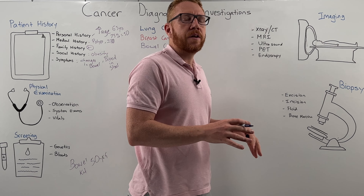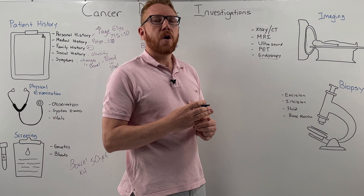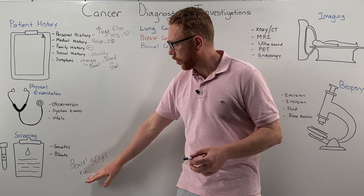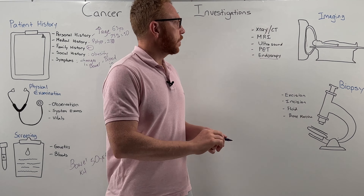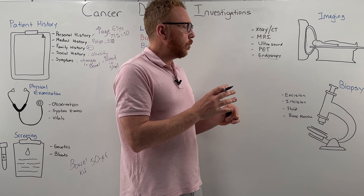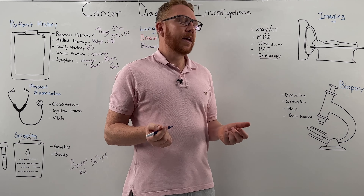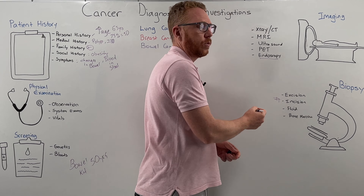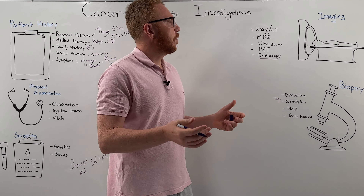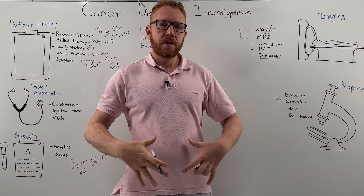For imaging, a colonoscopy is performed — particularly for high-risk individuals or those who returned a positive bowel kit result. The colonoscopy looks for suspicious tissue, which is then biopsied, usually via incision biopsy, to confirm the diagnosis. If cancer is confirmed, spread is assessed through MRI or CT of the pelvis.